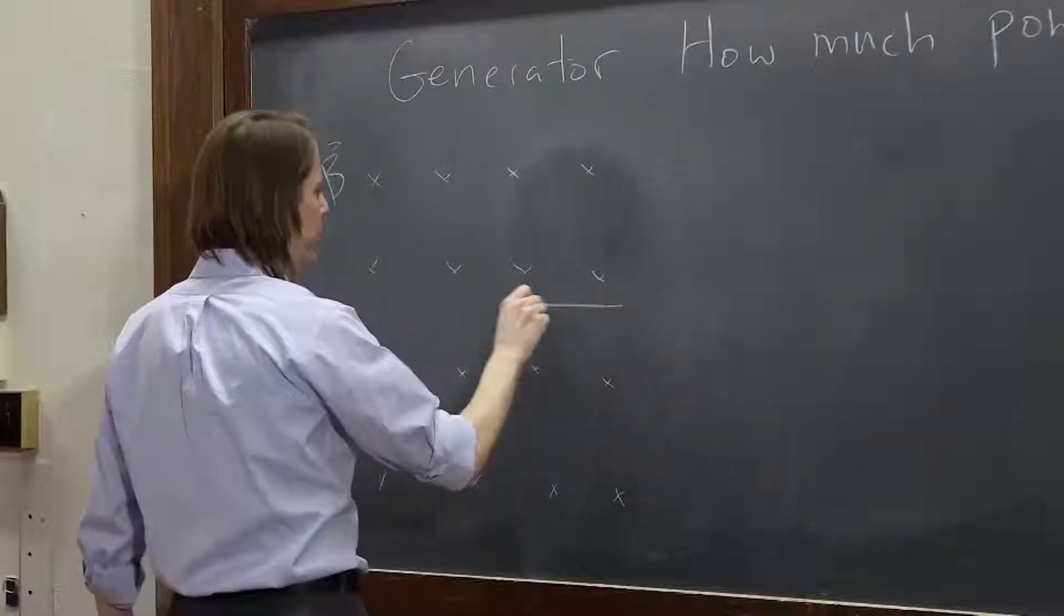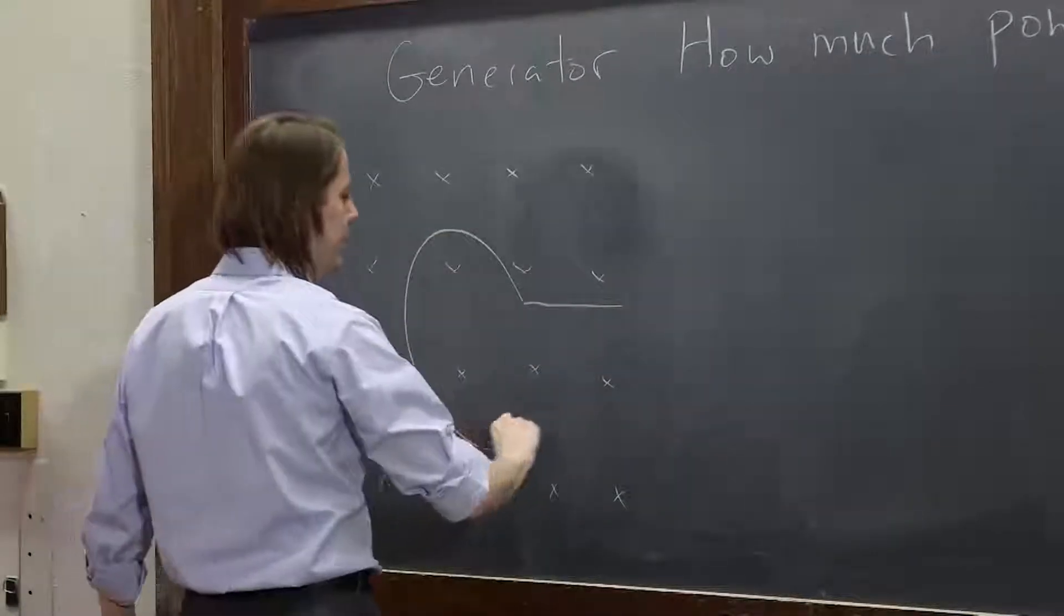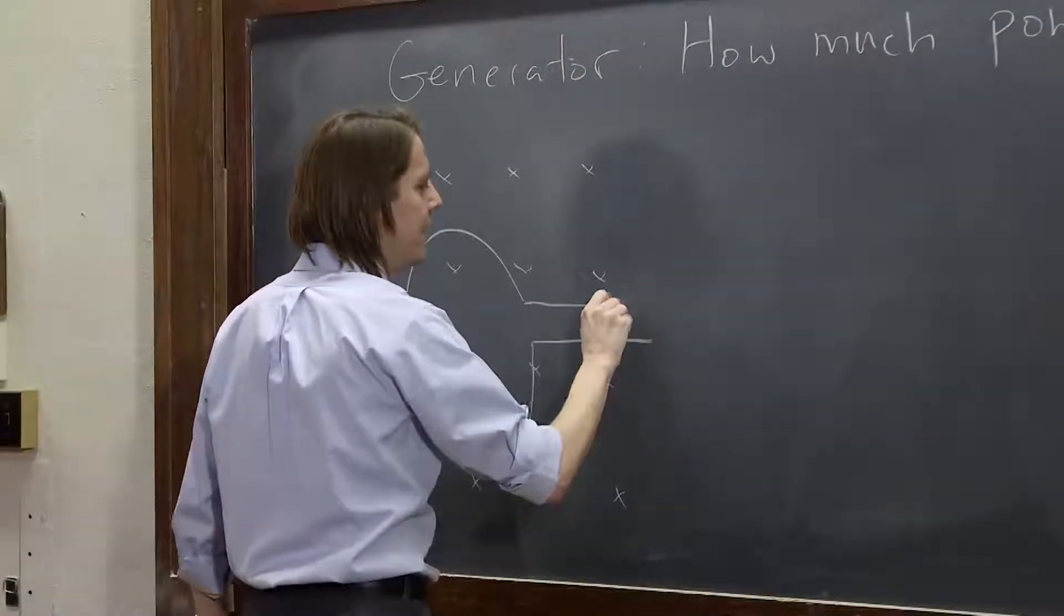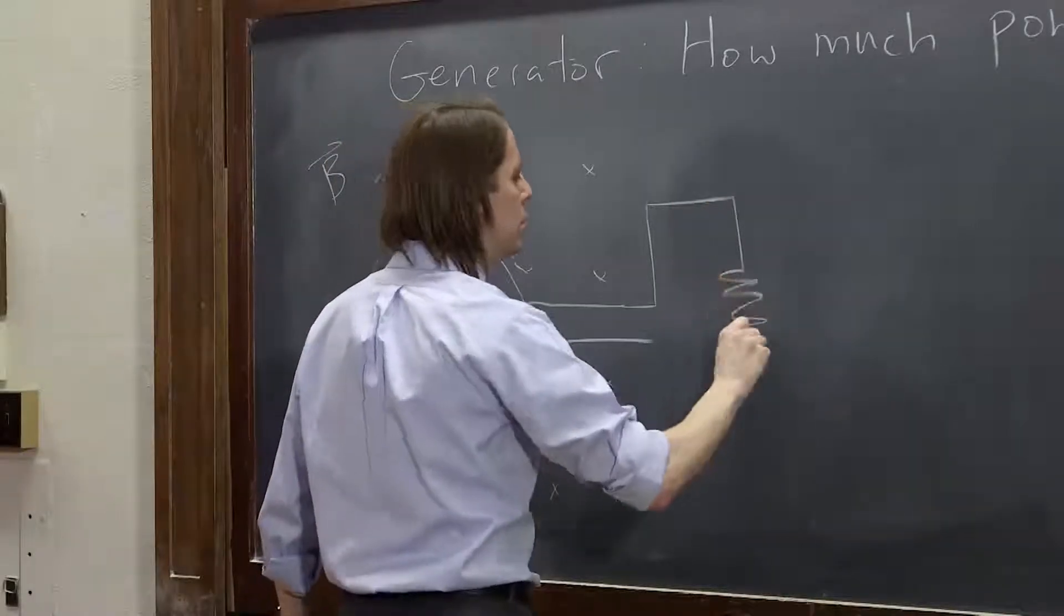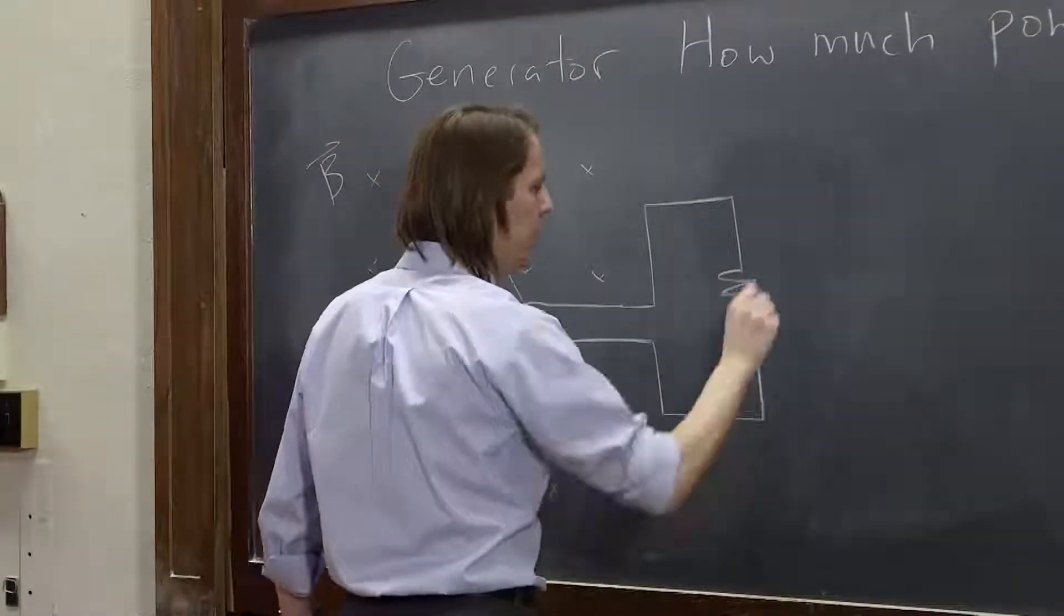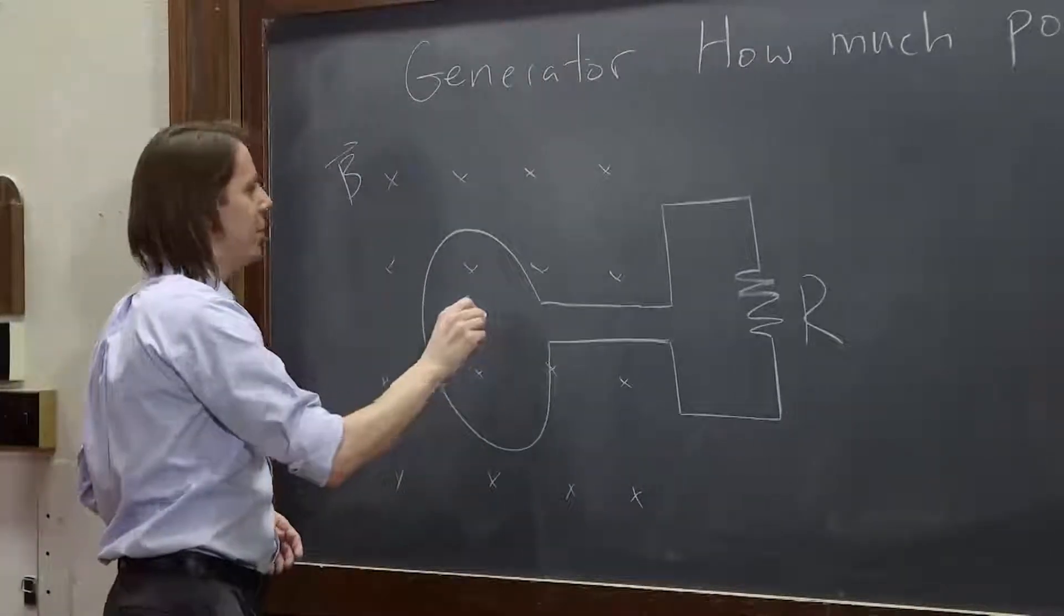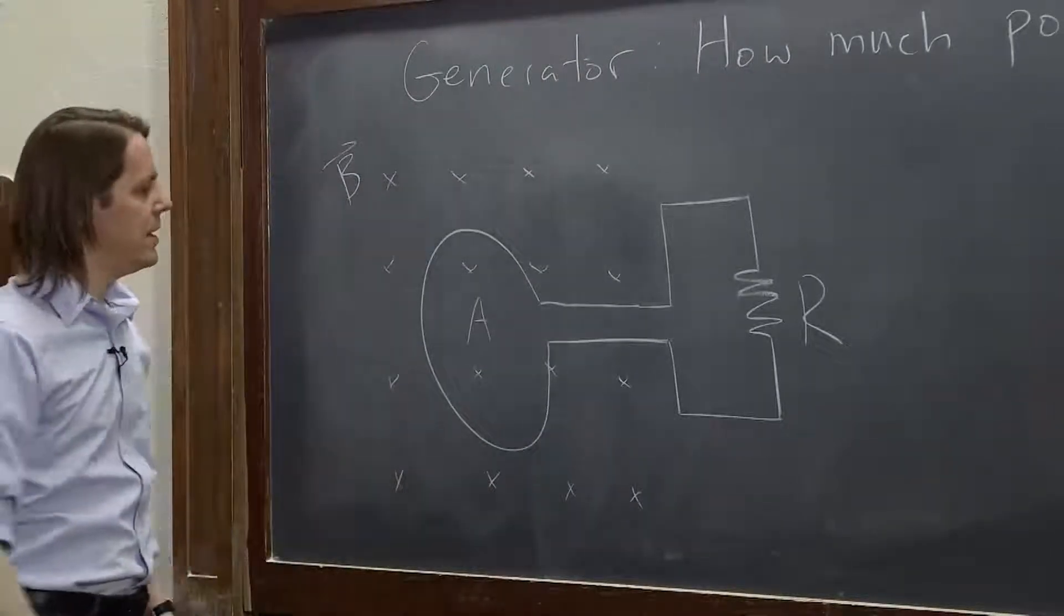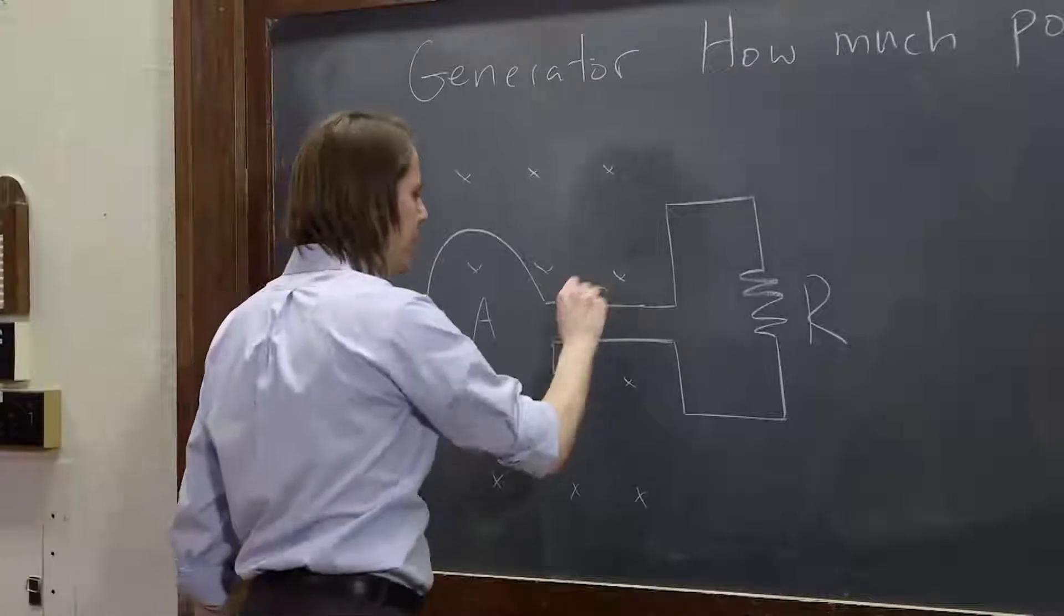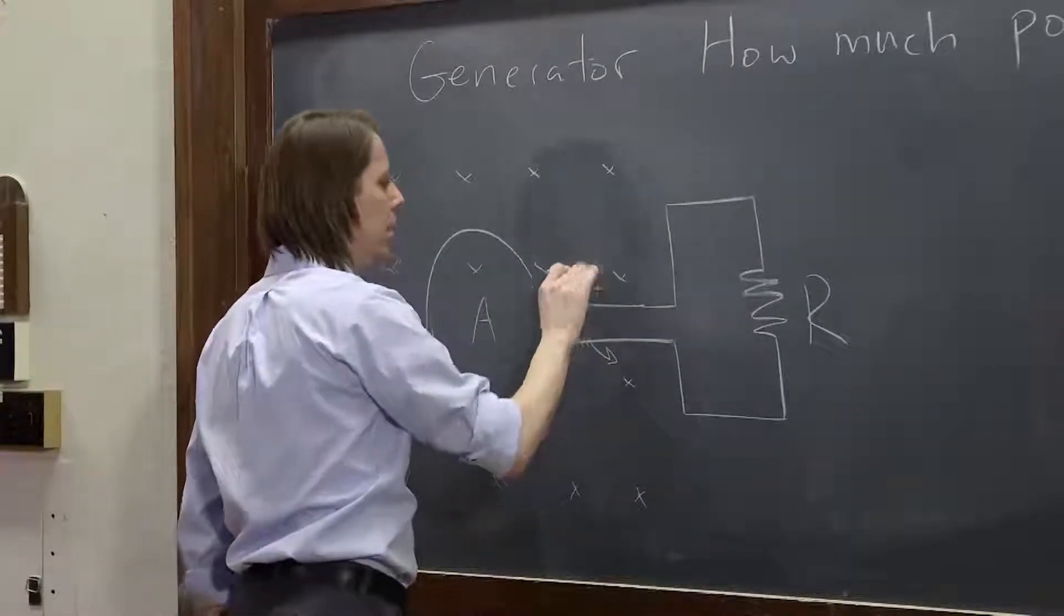And then imagining our loop, I'll draw it in the board like this, and then it goes to a circuit with resistance R. Everything else is the same. It has area A, this is B, and somehow this whole thing is going to rotate at omega.